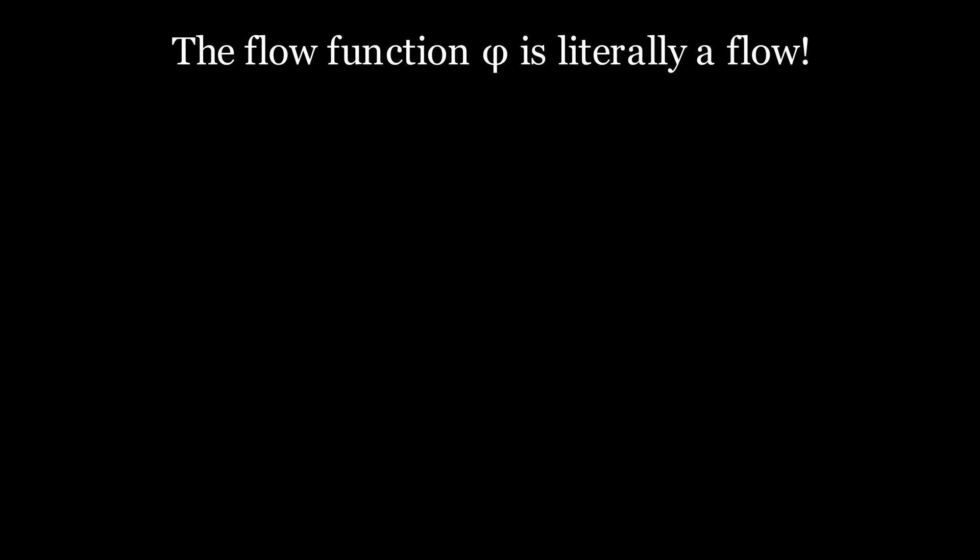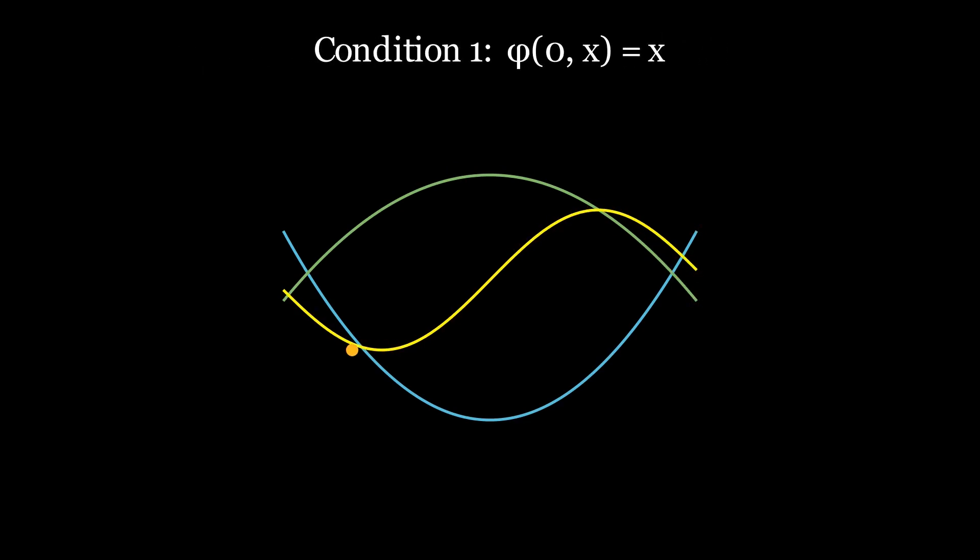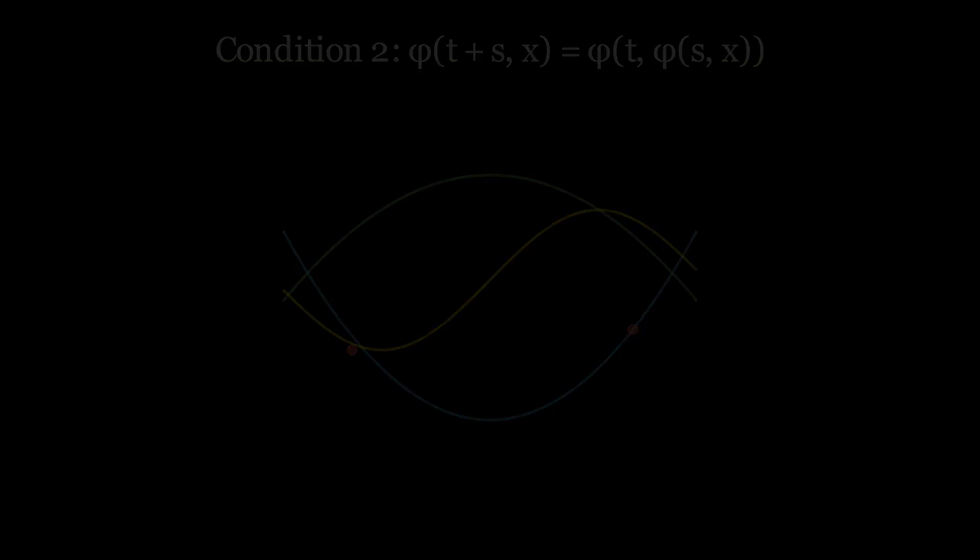The phi function, which we called the flow function, is literally just a flow. Just imagine you throw a rock in the river. There are different flows and those flows take your rock to different places. The first condition says that if you are at position x, then if no time passes, you still will be at the same position. And the second condition says that if a flow takes you for t plus s seconds, you will end up at the same position as if the flow takes you for s seconds and then t seconds.